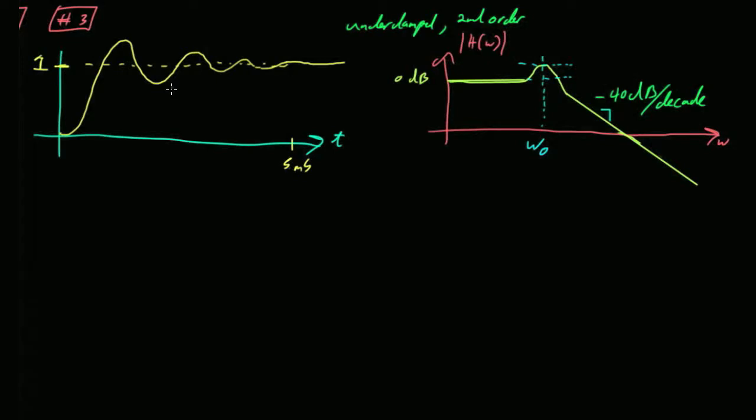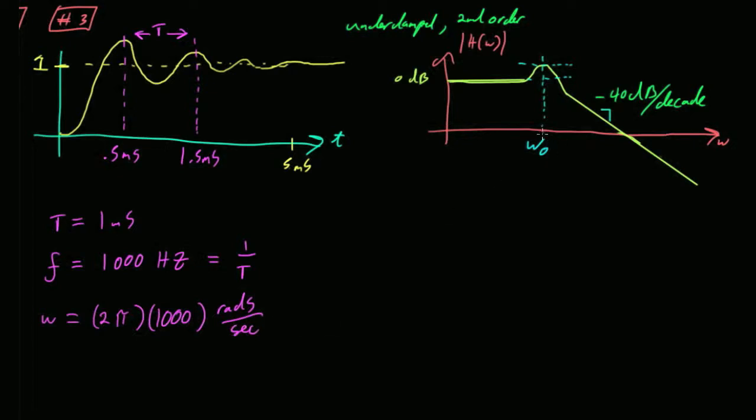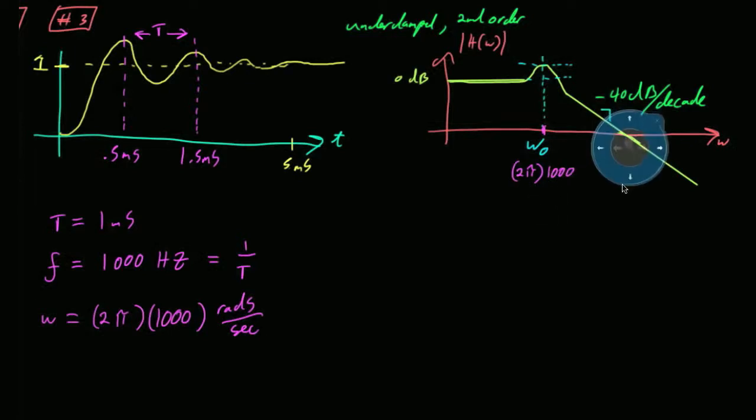So, all you've got to do is come and measure the frequency of this circuit, of this step response. So, according to this, my first peak is at roughly half a millisecond. My second peak is at roughly one and a half milliseconds. What's my period? What's my frequency in hertz? One thousand, right? One over T. So, it's one over T, which is a thousand hertz. And I don't need just f, I need omega. So, it's going to be two pi times that. So, two pi times a thousand rads per second. So, this omega naught happens at whatever two times pi times a thousand is.